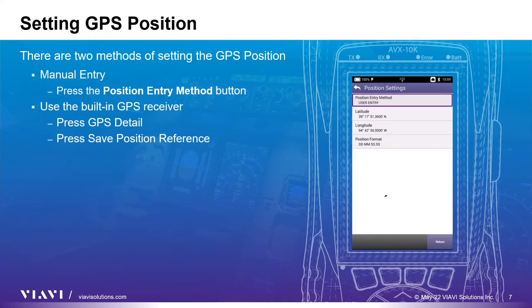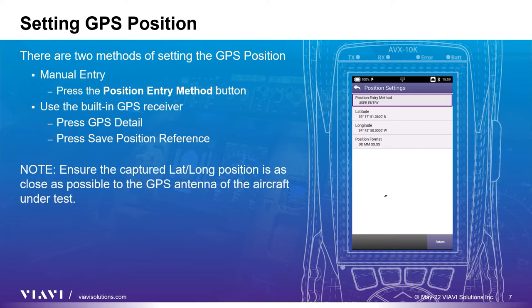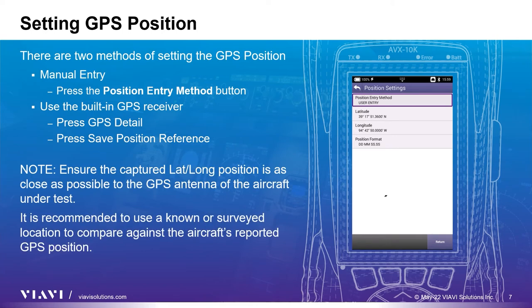The next setting is the GPS position setting, which provides users with two options for setting the GPS test reference location. User entry allows users to manually enter the latitude and longitude via the touch screen. Or, if you have access to the open sky, choose GPSRX and the AVX-10K internal GPS receiver will automatically set the location. Once you have a 3D fix, select save position reference to transfer the latitude and longitude as your test reference GPS position. Note: please ensure that the latitude and longitude position captured is as close as possible to the aircraft under test's active GPS antenna. It is recommended to use a known or surveyed location to compare against the aircraft's reported GPS position for best results.